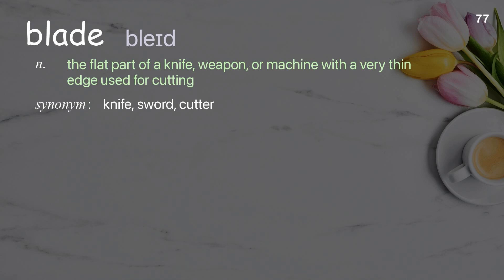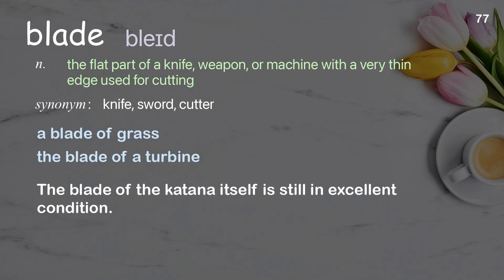Blade: the flat part of a knife, weapon or machine with a very thin edge used for cutting. Examples: a blade of grass, the blade of a turbine. The blade of the katana itself is still in excellent condition.